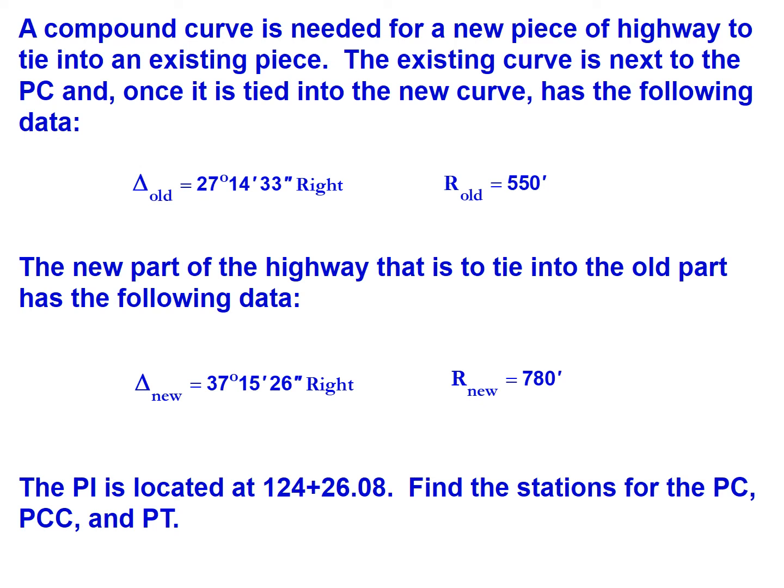A compound curve is needed for a new piece of highway to tie into an existing piece. The existing curve is next to the PC, and once it's tied into the new curve has the following data: an intersecting angle of 27 degrees 14 minutes 33 seconds to the right and a radius of 550 feet.